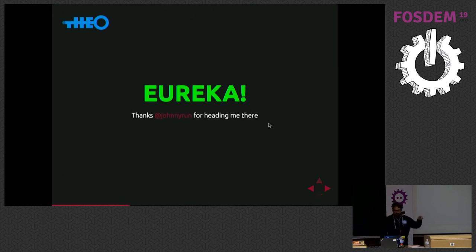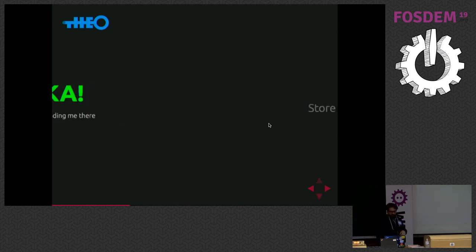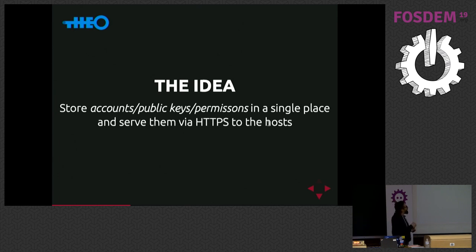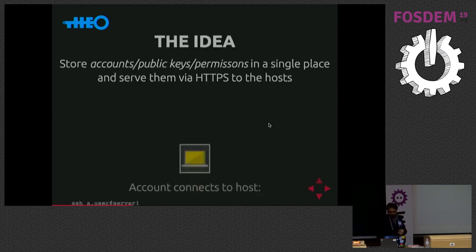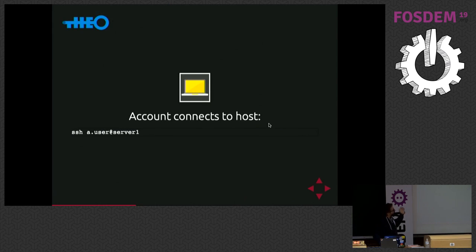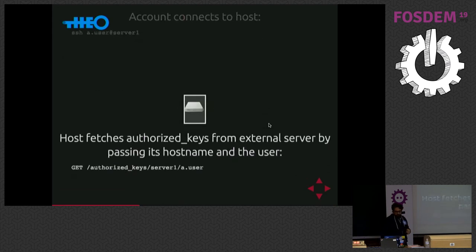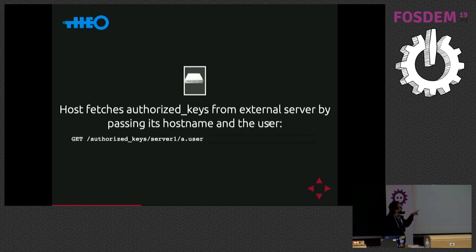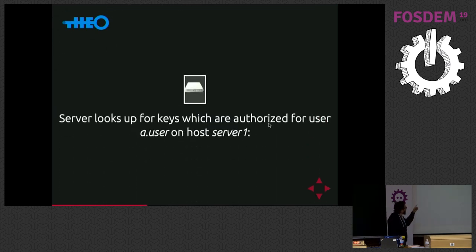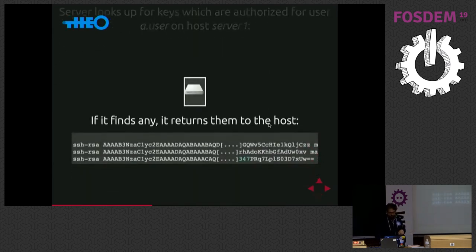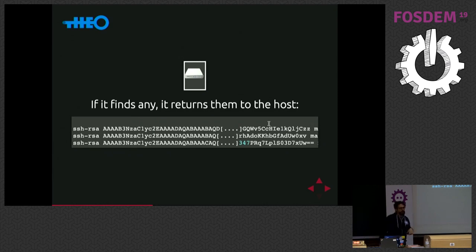Thanks to Gianni, the idea is to store accounts, public keys, and permissions in a single place, and serve them through HTTPS to each host. So from whatever client you SSH with a username to the host, the host fetches authorized keys from an external server, passing the hostname and the user to the server. Like: GET authorized_keys hostname and user. The server — Theo in this case — looks up the keys authorized for that user on that host, and if it finds any, it returns them like a normal authorized keys file.